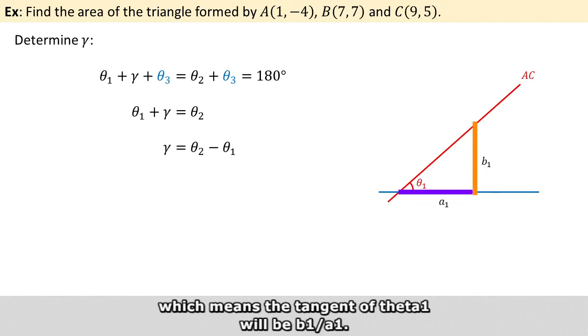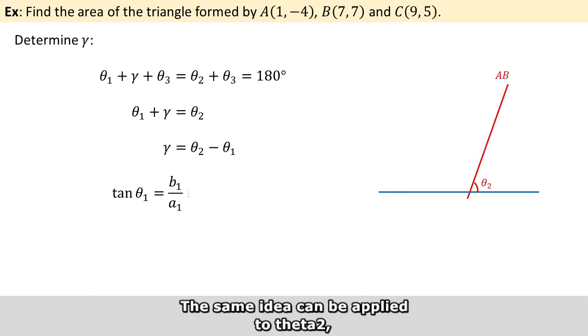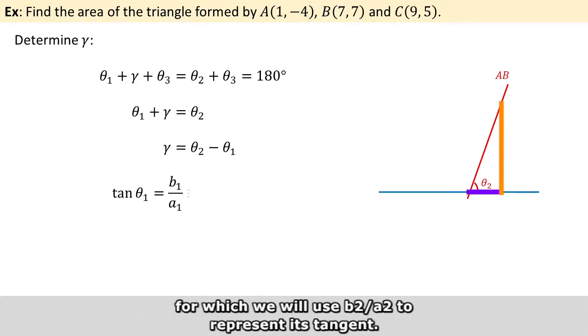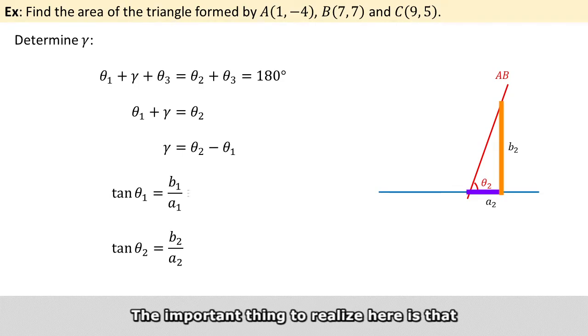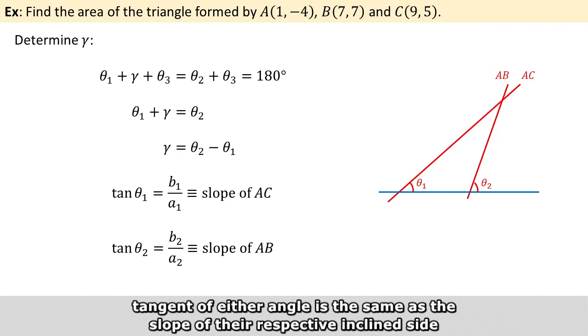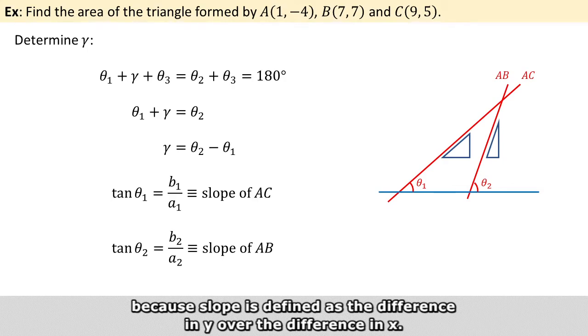The same idea can be applied to theta 2, for which we will use b2 over a2 to represent its tangent. The important thing to realize here is that the tangent of either angle is actually the same as the slope of their respective inclined side, because the slope is defined as the difference in y over the difference in x.